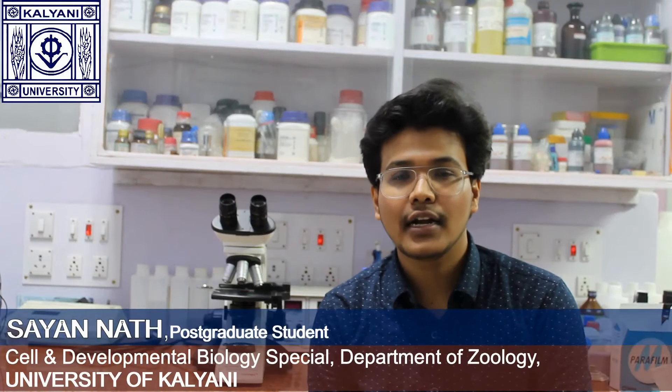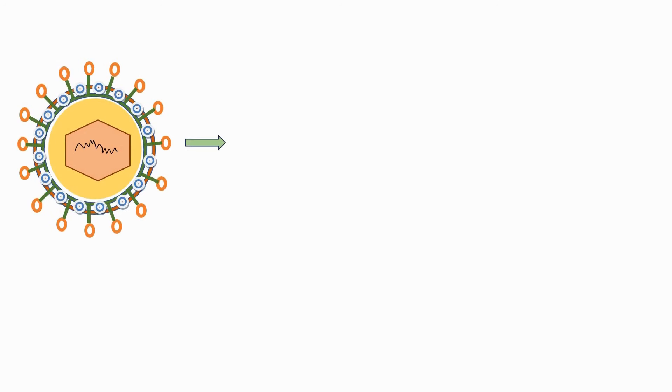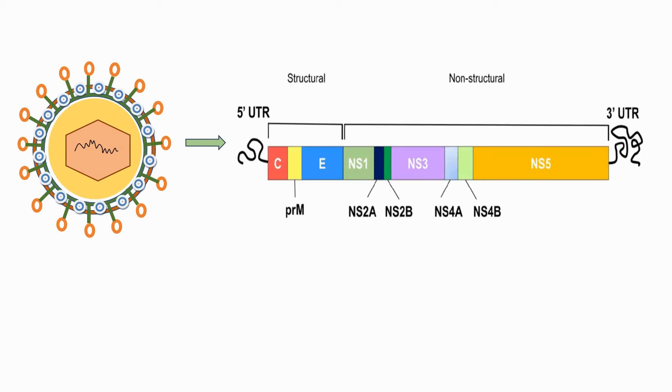Dengue virus falls under the family Flaviviridae and within the genus Flavivirus, as a positive-sense single-stranded RNA virus. The genome of the dengue virus RNA has 5' and 3' untranslated regions with an open reading frame in the middle. The open reading frame encodes a single polypeptide chain, which is the precursor of 10 proteins. After proteolytic cleavage, this polyprotein chain contributes 3 structural proteins and 7 non-structural proteins.